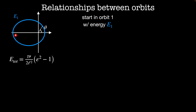Imagine I start in this orbit with energy E1. Let's pick a coordinate system for this orbit — here is our angle theta. Then the equation for the orbit is R1 equals C1 divided by 1 plus the eccentricity of the orbit times cosine of the angle theta.